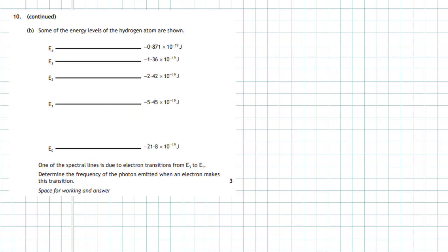Question 10b from Section 2 of the 2018 Higher Physics examination. Some of the energy levels of the hydrogen atom are shown: the ground state E₀, E₁, E₂, E₃, and E₄. One spectral line is due to electron transitions from E₃ to E₁ — determine the frequency of the photon emitted. The electron is going from E₃ down to E₁, making a downward transition, so it gives off a photon of light.